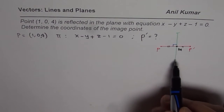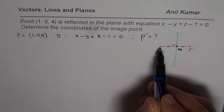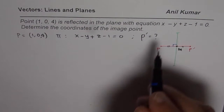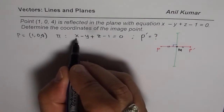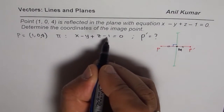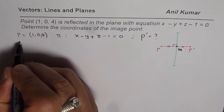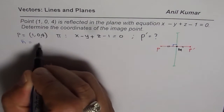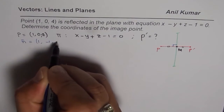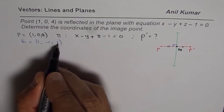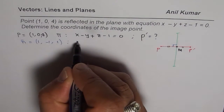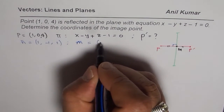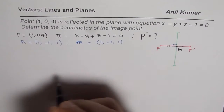If this line is perpendicular to the plane, then the direction of this line is the same as that of the normal of the plane. Since the equation is x minus y plus z minus 1 equals 0, we know that the normal for the plane is equal to (1, −1, 1). This normal is the same as the direction vector for the line, so the direction vector is (1, −1, 1).